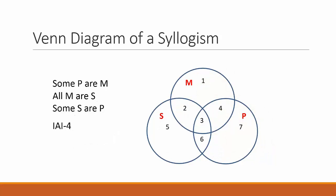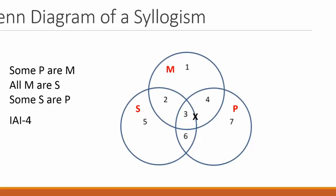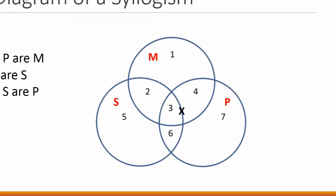Let's test the validity of another syllogism, this time an argument that has particular claims in it: some P are M, all M are S, some S are P. This is a syllogism with the mood IAI and figure 4. We indicate a particular claim in a Venn diagram by drawing an X in the appropriate area. The first premise says that there is at least one P that is an M, so an X goes in the part of the P circle that overlaps the M circle — areas 3 or 4. If we don't know which area to put the X, we draw it on the line between the two possible areas.